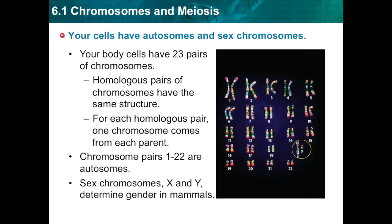Your cells have autosomes and sex chromosomes. Suppose you have 23 pairs of gloves — you would have a total of 23 times 2, which is 46 gloves. You could divide them into two sets: 23 right-hand and 23 left-hand gloves. Just like that, your body cells have 23 pairs of chromosomes for a total of 46. These can be divided into two sets: 23 from your mother and 23 from your father. Just as you use both gloves, your cells use both sets of chromosomes to function properly.